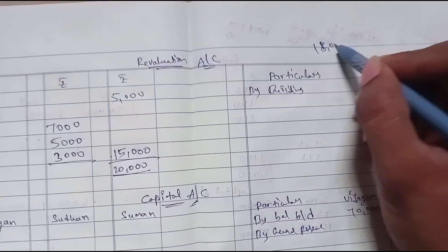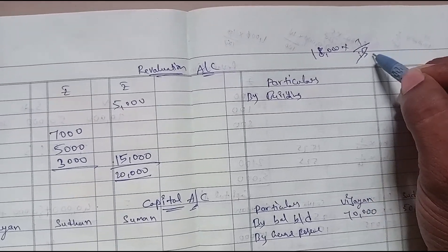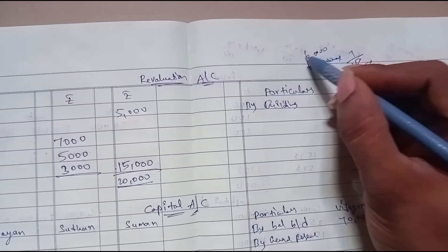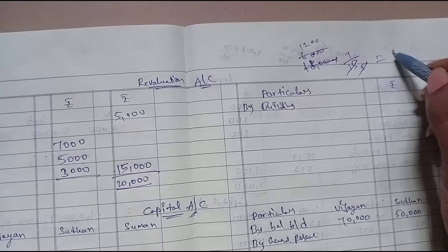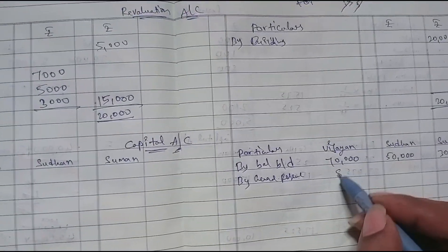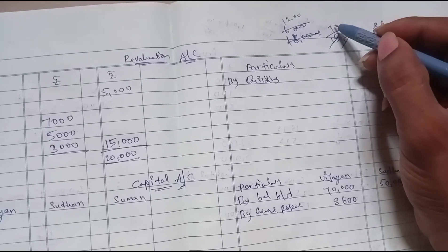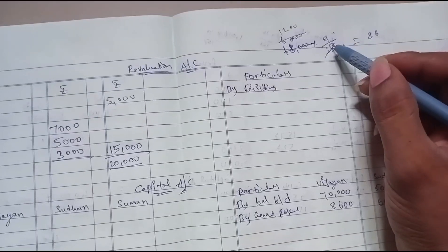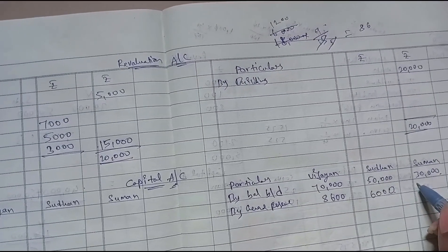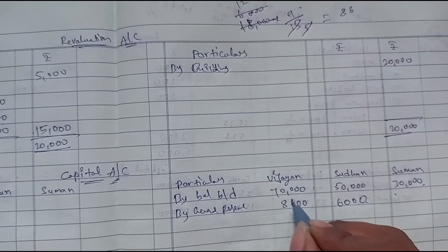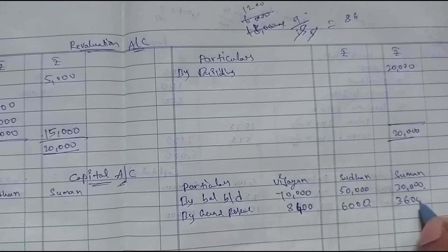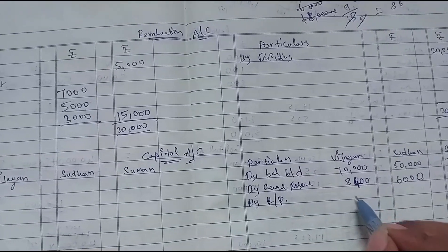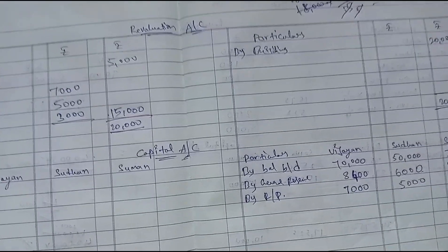General Reserve 18,000 distributed: Vijayan = 18,000 × 7/15 = 8,400; Sudhan = 18,000 × 5/15 = 6,000; Suman = 18,000 × 3/15 = 3,600. Revaluation Profit: Vijayan 7,000; Sudhan 5,000; Suman 3,000.